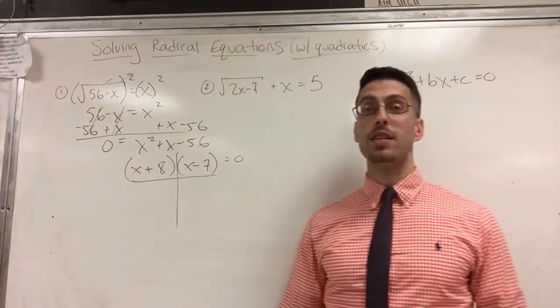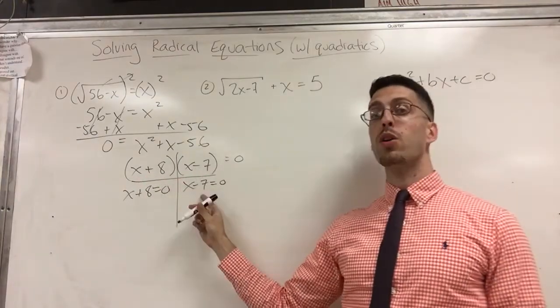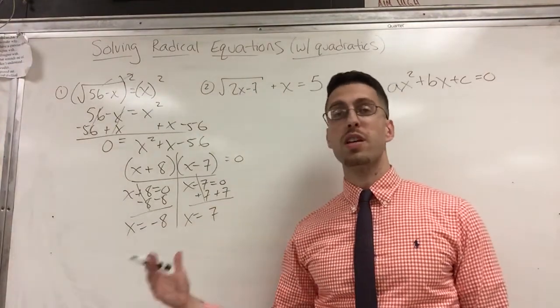And then I'm ready for my t-chart. If this times this equals 0, they call that the 0 product property, either the first expression is 0 or the second expression is 0. So either x + 8 = 0 or x - 7 = 0. Now you're looking at one step equation. At either x = -8 or x = 7. Generally, especially when I first learn this, from here down, if I get two answers I'm happy with both answers and I usually say they're both correct. But you should, just to be sure, check your answer. And when you're dealing with radical equations, when I check my answer, often is the case that one of them doesn't work.